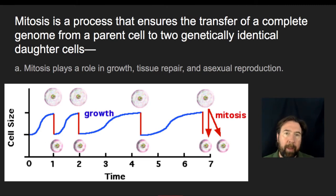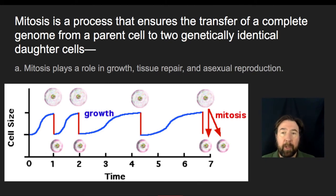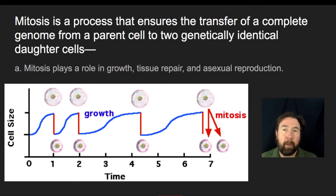Mitosis plays a huge role in the growth of organisms — cells grow and, once they've reached a maximum size, those cells will divide, producing two cells that take up the same space. When those cells grow, we will have doubled the size of the organism. Mitosis can also be involved in tissue repair — if you have damage to skin, you will divide healthy tissue into that place in order to have repaired tissue.